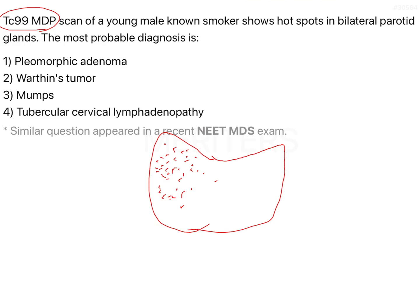The dark dots on the scan represent parts of the gland that have taken up the isotope. In that NEET MDS question, the entire thyroid appeared dark, meaning the whole gland had taken up the isotope. The diagnosis in that case was Graves' disease, because in Graves' disease the entire glandular structure takes up the isotope.